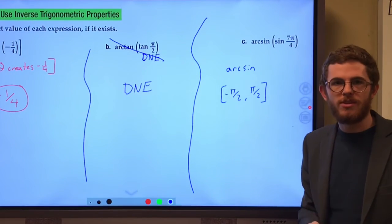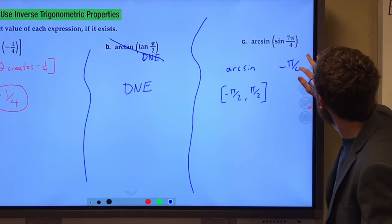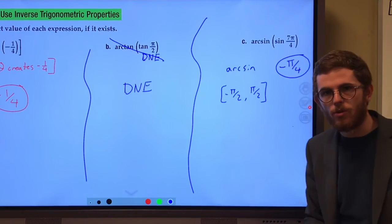We want the answer to be that coterminal angle, it's going to be that negative pi over four.